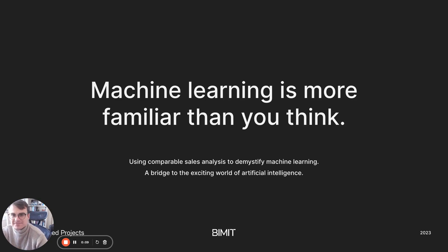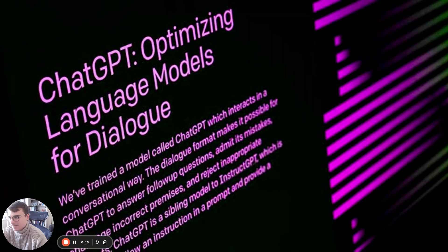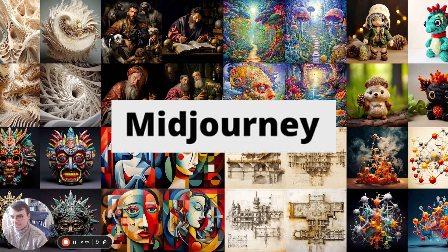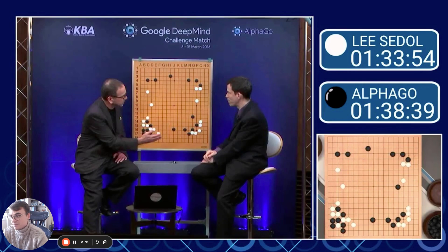It seems like everyone's using it, but what do we know about it really? We know that we can talk to it and have conversations about almost anything, and it's really smart. We know the thing can make pictures, and with the right kinds of inputs the pictures can be beautiful. We know the systems have started to demonstrate creativity even beyond humans, as was shown by AlphaGo and its games against Lee Sedol.